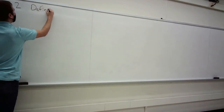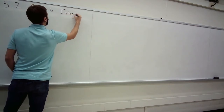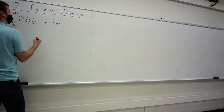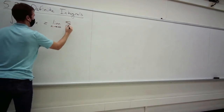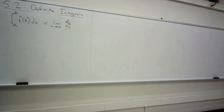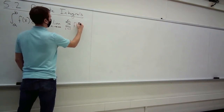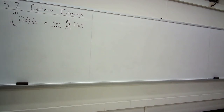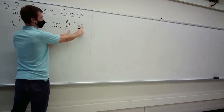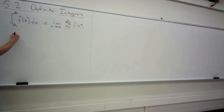We ended last time with the definition of what a definite integral is, which basically says the definite integral from a to b of a function f(x) dx equals the limit as n goes to infinity of a sum — the sum of all these little rectangle areas, where f(x*_i) is the height of the i-th rectangle for some choice of x within a sub-interval of [a, b].